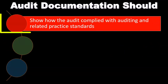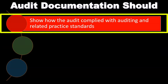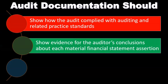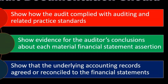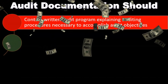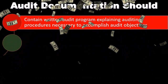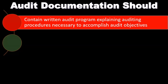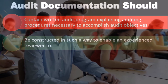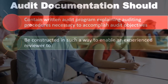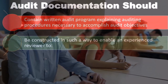Audit documentation should show how the audit complied with auditing and related practice standards, show evidence for the auditor's conclusion about each material financial statement assertion, show that the underlying accounting records agree or reconcile to the financial statements, and contain a written audit program explaining auditing procedures necessary to accomplish audit objectives. It should also be constructed in such a way to enable an experienced reviewer — someone else looking at the documentation — to see whether it does indeed support the audit opinion.